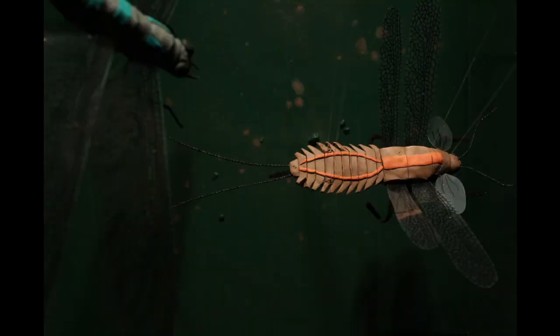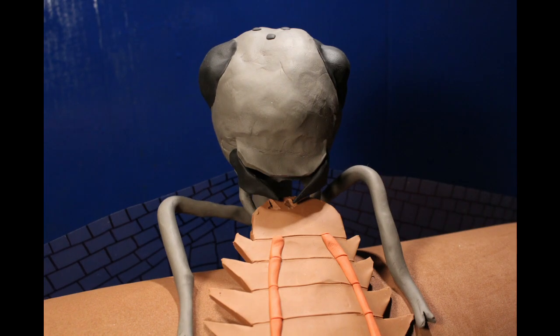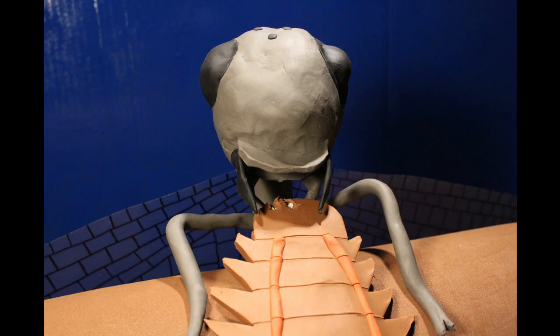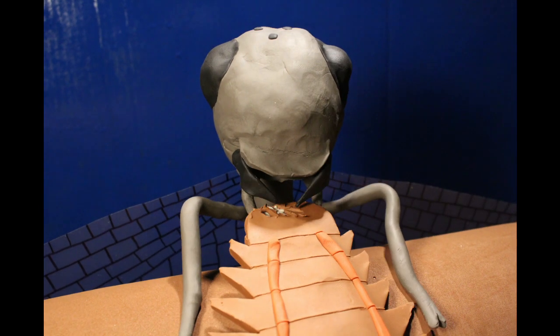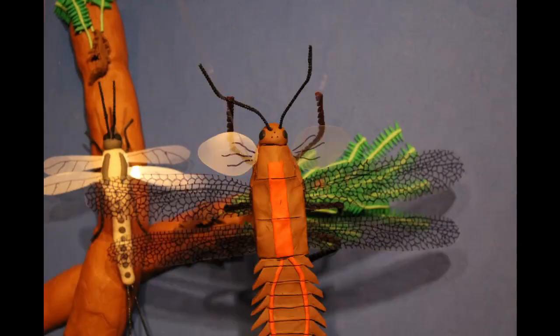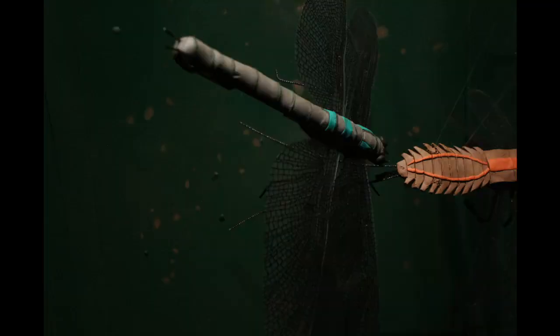With its 70-centimeter wingspan, the griffinfly Meganeura was the apex predator of the Carboniferous skies. And although oxygen levels fell and the end of the later Permian period saw these giants go extinct, the gift of flight lived on.